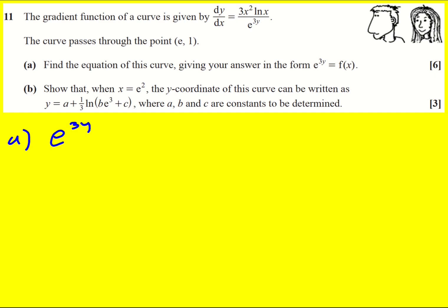Get a function of y onto the left because we cannot integrate it as it stands. We can't just stick an integration sign here because we don't know how y relates to x. So what we do is multiply through by e to the 3y and then this is going to equal 3x squared ln x.